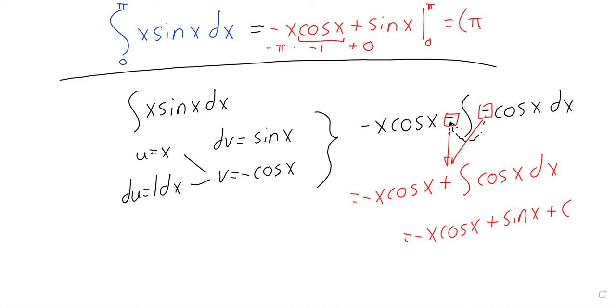And now I have run out of space. What happens when we plug pi in? Well, the cosine of pi is going to be negative 1, so we'll get negative pi times negative 1. The sine of pi is 0, so we'll get positive pi. And what happens when we plug 0 in? We in fact get nothing. The cosine of 0 is 1, but then it gets multiplied by 0, and the sine of 0 is 0. So we end up with pi.